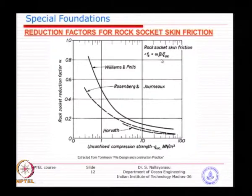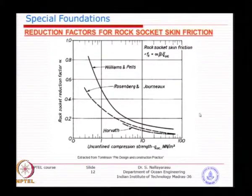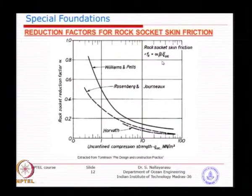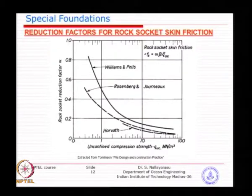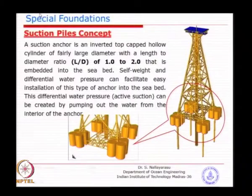The methodology developed is purely for the concrete-to-rock interface. It may not be 100 percent applicable to a steel pile with a small grout annulus. However, the principle still applies — you can take a fraction of unconfined compressive strength, whether using alpha times beta or, as in BS 8081, taking 10 to 30 percent of the strength as the interface skin friction.